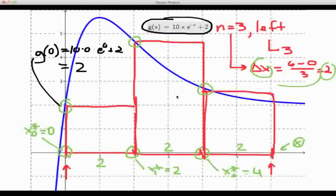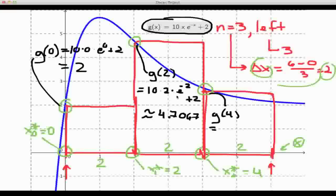The second rectangle goes up to here. Let's write down what its height value is. It's going to be g of the endpoint, which is g of 2. In this case, that is 10 times 2 times e to the minus 2, all that plus 2. That works out to be approximately, to four decimal places, 4.7067. Finally, this third rectangle right here, the height of it is g of x2 star, that's g of 4. And that's going to be 10 times 4 times e to the minus 4 plus 2. And again, that works out to be approximately, to four decimal places, 2.7326.